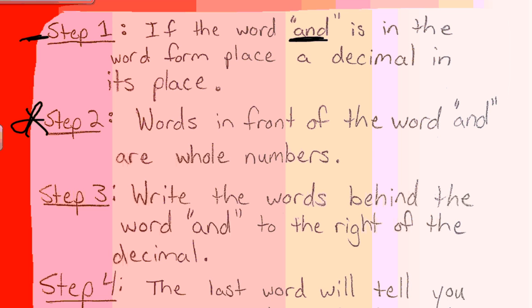Step number two says the words in front of the word AND will actually be written as the whole numbers, so they will be to the left of the decimal.